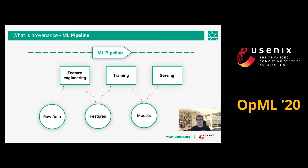Provenance involves logging the operations in your platform in order to be able to link together applications with their input and output files, as well as system environment setups such as library versions, together with application configuration parameters. This allows us to build a history of events that can be traversed and queried for relevant information.